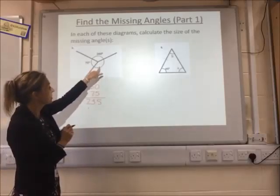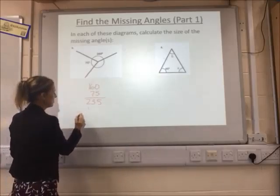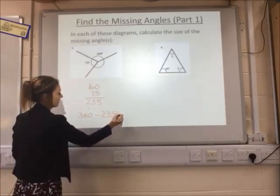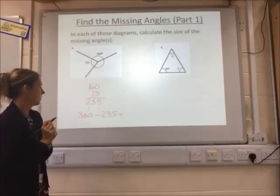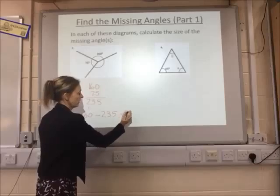So what's left up to 360 is what this angle here is. So you need to do 360 degrees take away 235, which will give you 125 degrees.